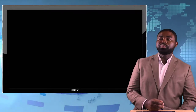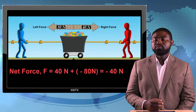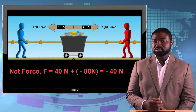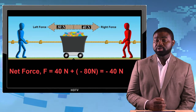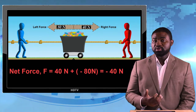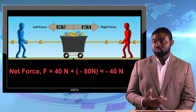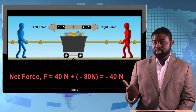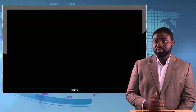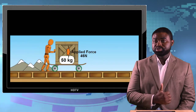Understand that this is really crucial. Suppose for example that a force of 40 newtons is applied to the right and a force of 80 newtons is applied to the left. The system will eventually move to the left because a bigger force is applied to the left. That means the net force acting on the system is 40 newtons to the left.